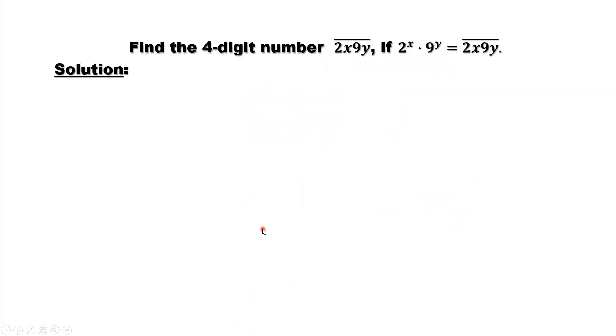First of all, we need to prove that x cannot be 0. x is a digit from 0 to 9. Same thing for y, y value can be 0 up to 9.